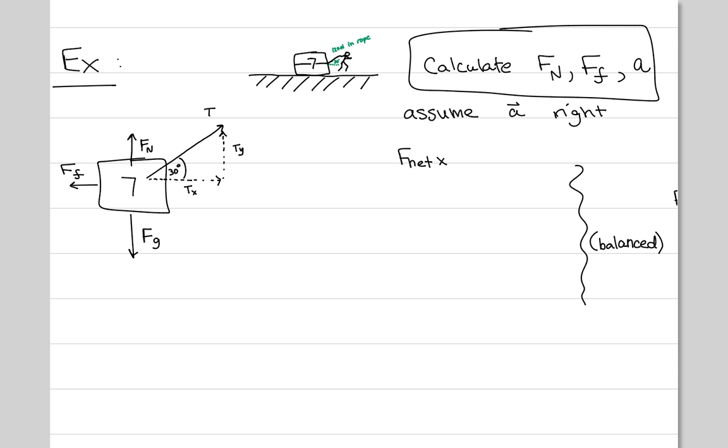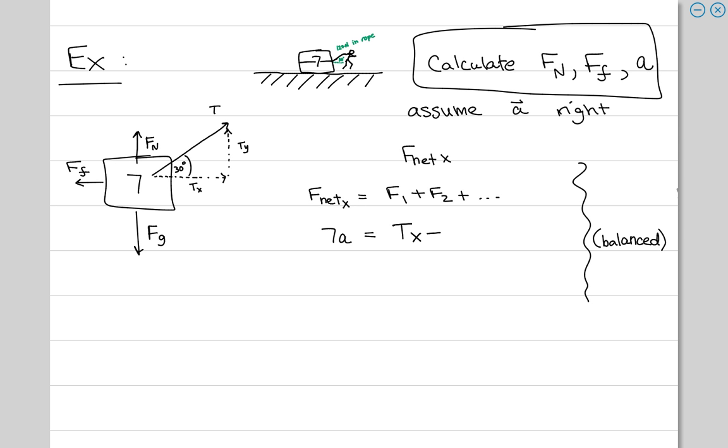Now let's jump over to X. What's happening in X? So you're going to write F net X equals F1 plus F2 plus dot dot dot. Now for this one I've told you that it's accelerating right. So are the forces balanced? No. So instead of putting zero there, because the acceleration is not zero, you're going to put MA. So you put 7A. You guys okay with that? Okay. Now let's analyze all the horizontal forces acting on this body. There is FF and there is TX. Which one's bigger? So put that one first, TX minus FF.